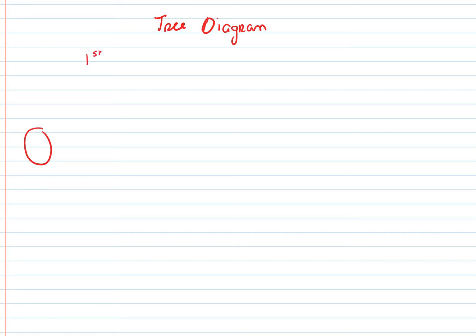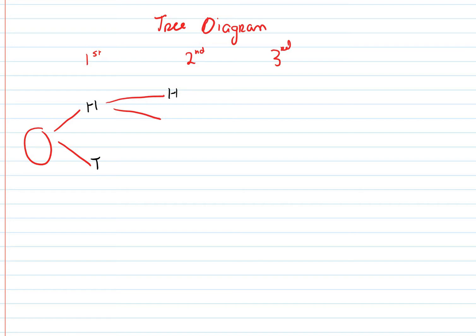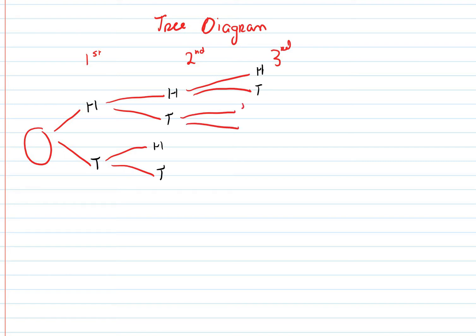If this was my first toss, this is my second, and this is my third, here is my coin. I could toss the coin and get a head or a tails. If I got a head the first time and tossed it again, I could get another head or a tails. If I got a tails the first time, I could get a head or a tails the second time. And likewise for each branch, head or tails.